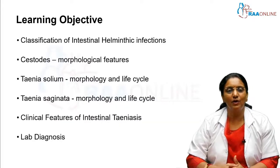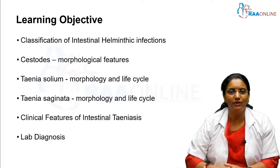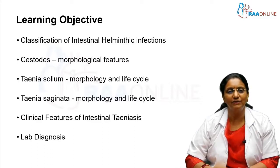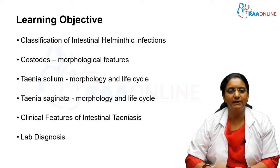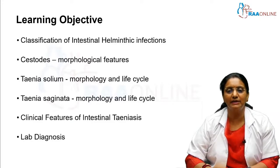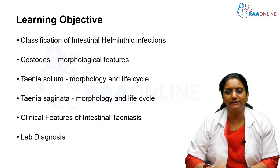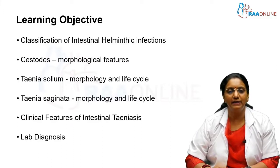We are going to talk about the classification of intestinal helminthic infections, then a little bit about the morphological features of cestodes — what type of worms they are. Then we are going to talk about Taenia solium morphology and life cycle, Taenia saginata morphology and life cycle, the clinical features associated with intestinal teniases, prevention, and of course the most important in microbiology — the lab diagnosis of intestinal teniases. These are the learning objectives for this session.